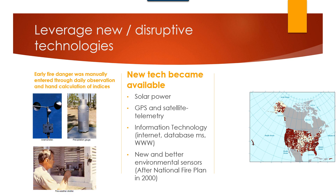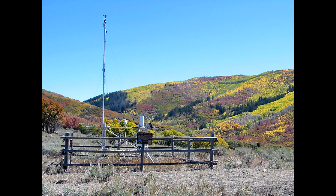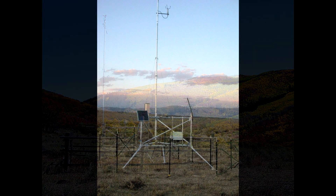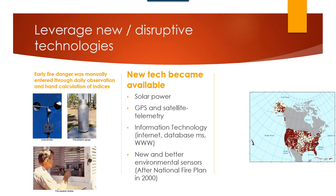There's a lot of new technology that has become available. Things like solar power mean we can have a weather station in a remote area that doesn't have traditional landline power and it can relay that information by leveraging things like GPS and satellite telemetry — we can send observations up and back down into a central database. That's the other piece that has really evolved: the information technology, the ability to use the internet and database management systems and the world wide web to really leverage how we get data into a central place, calculate fire danger indices, and distribute those indices to users across the country.